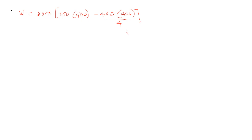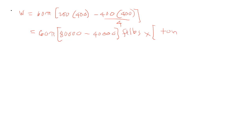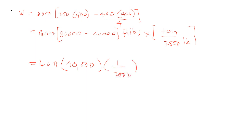W equals 60π times (200 times 400 minus 400 times 400 over 4), equals 60π times (80,000 minus 40,000), equals 60π times 40,000, giving W equals 377,040π foot-pounds.